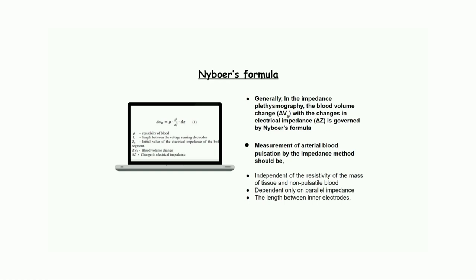In this project we have used the Nyboer formula as our main theory. Generally, in impedance plethysmography, the blood volume change ΔVb with the changes in electrical impedance ΔEz is governed by Nyboer's formula. Here it shows the Nyboer formula. It shows that ΔVb equals ρ times L squared over Z₀ squared times ΔEz, where ρ is the resistivity of blood and L is the length between the voltage sensing electrodes and Z₀ is the initial value of the electrical impedance of the body segment. ΔVb is the blood volume change. ΔEz is the change in electrical impedance.